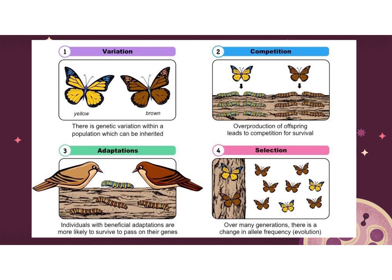Here are those four requirements again in picture form. You must have variation — different colors or traits in the population. You must have an overproduction of offspring, which leads to competition, which leads to only the strongest surviving. Adaptations then result, making certain organisms better able to survive, and then you get selection where those traits are selected for or picked by the environment.